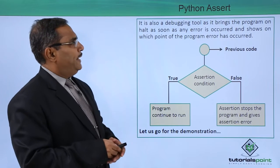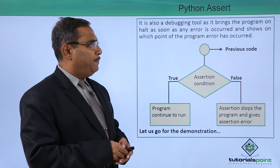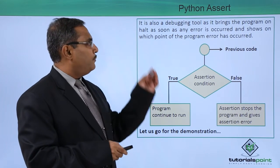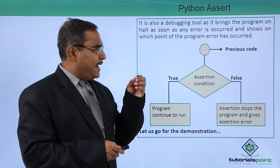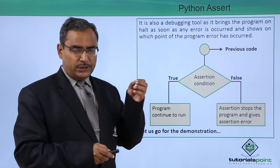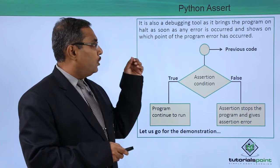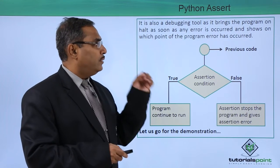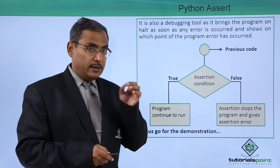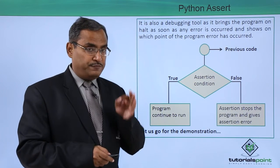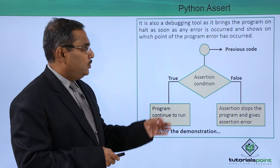Assertion is also a debugging tool, as it brings the program to a halt as soon as any error occurs and shows at which point in the program the error has occurred. That is the special feature of assertion.